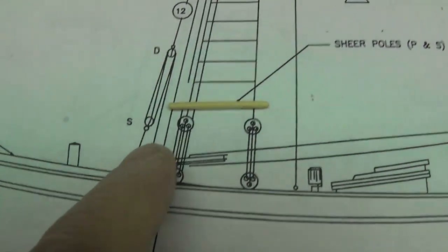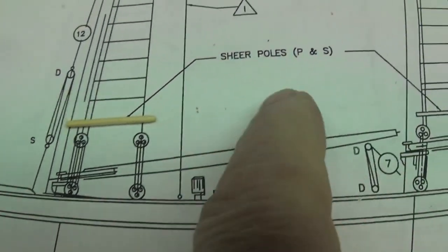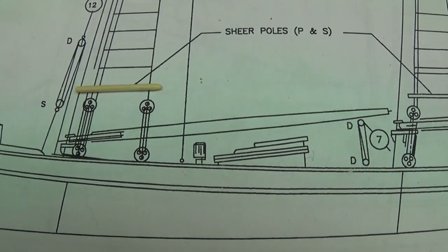I've cut to length and rounded over the ends of some bamboo dowels to form the shear poles, and those will go on just before we start tying the rat lines.